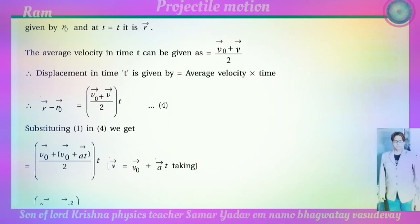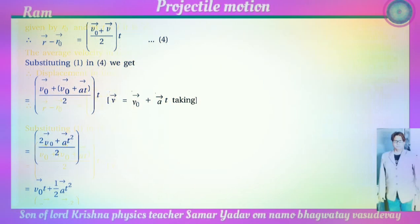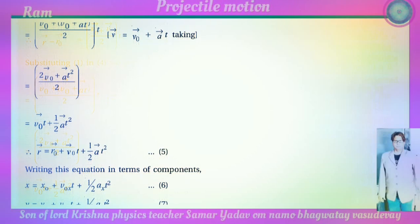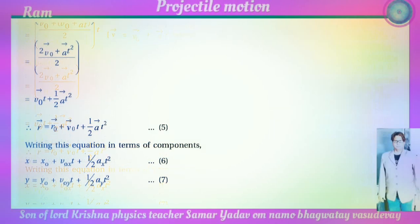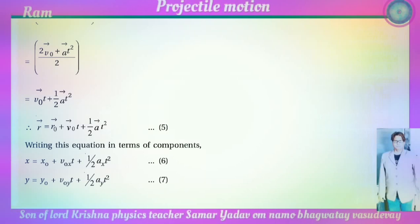Substituting v equals v-zero plus a t, we get r minus r-zero equals (2 v-zero plus a t) divided by 2 times t, which gives r-zero t plus one-half a t-squared. Therefore r equals r-zero plus v-zero t plus one-half a t-squared. Writing in component form: x equals x-zero plus v-zero-x t plus one-half a_x t-squared, and y equals y-zero plus v-zero-y t plus one-half a_y t-squared.